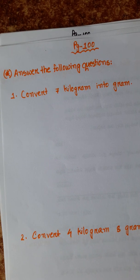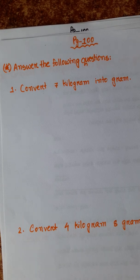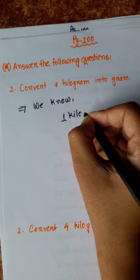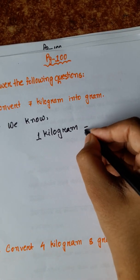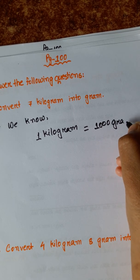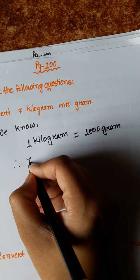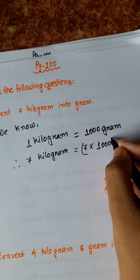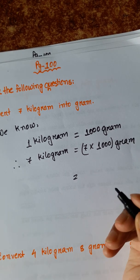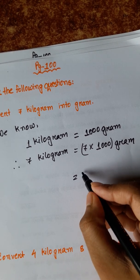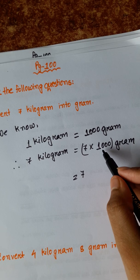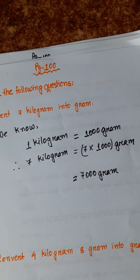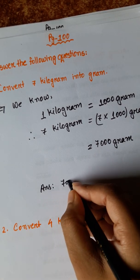Page number 100. Number 1: convert 7 kilograms into grams. We know 1 kilogram is equal to 1000 grams. So 7 kilograms is equal to 7 into 1000 grams. We write the multiplicand first and then add the zeros behind. 7000 grams — the answer is 7000 grams.